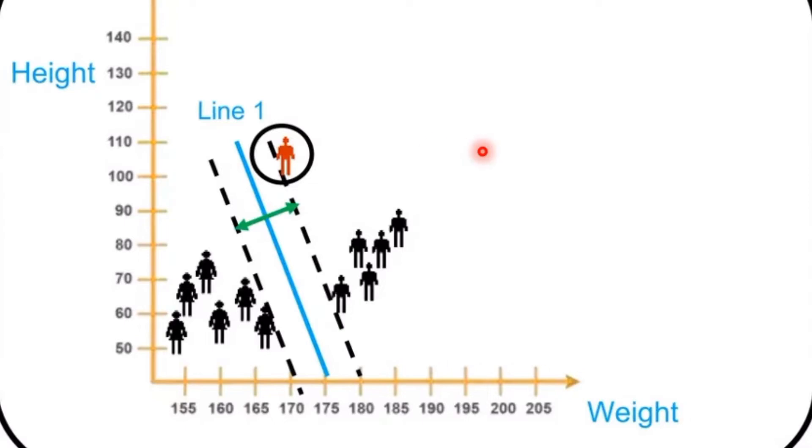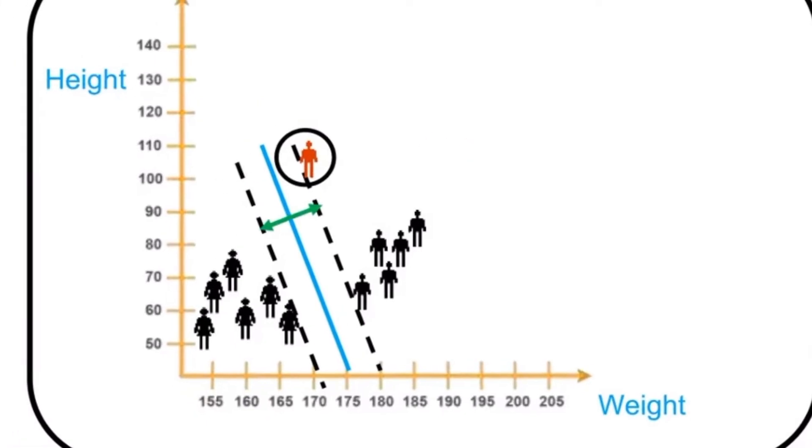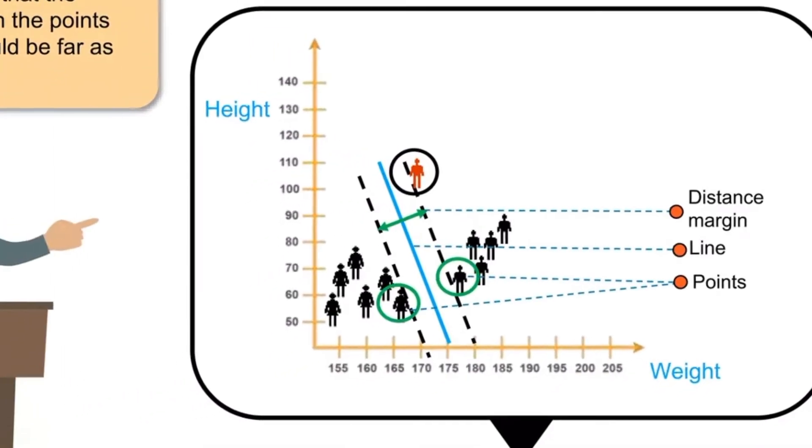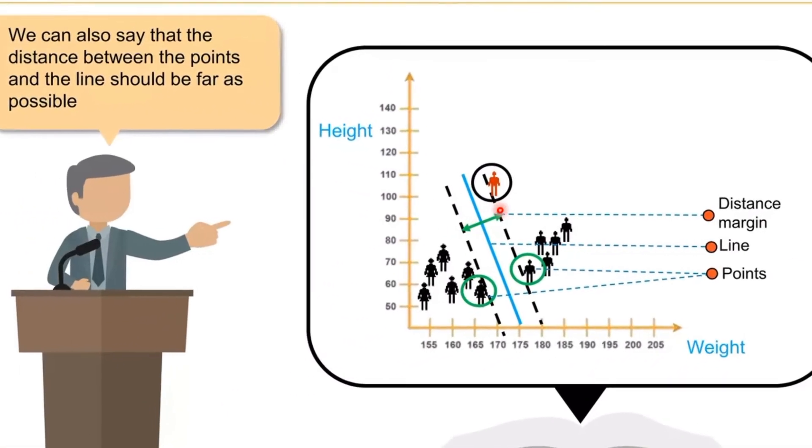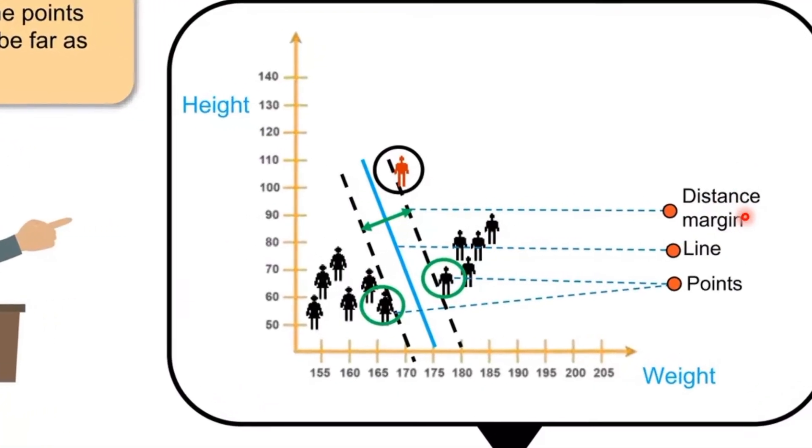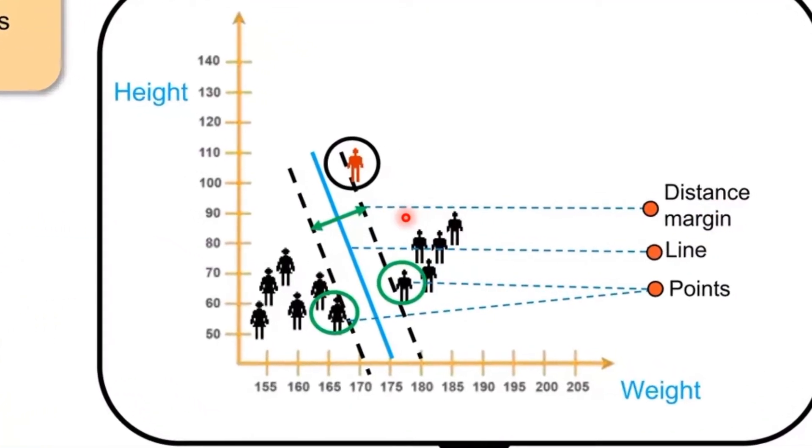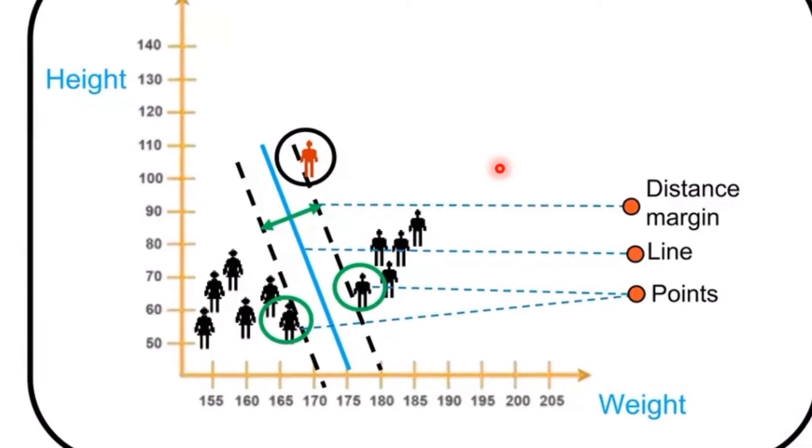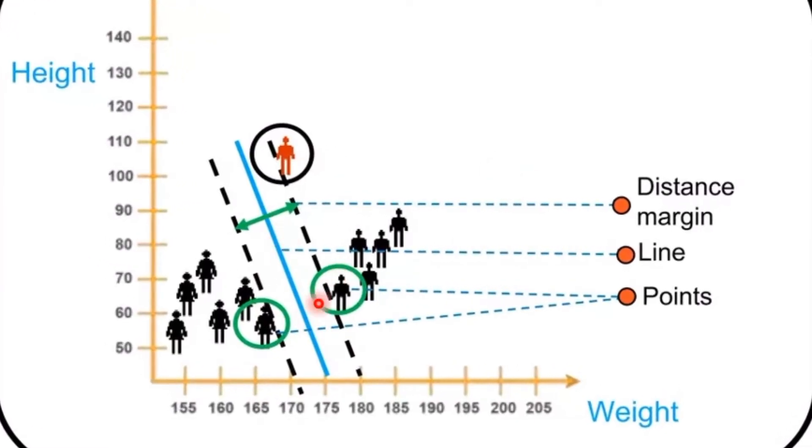This is how the best line has been chosen. Technical terms for it: this line is called the distance margin. Based on the distance margin, the classification is done. This blue color is called a line and these are the points.